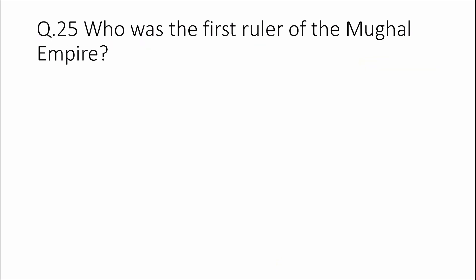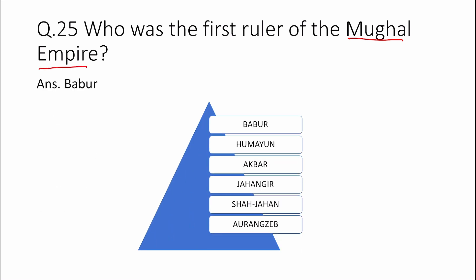Question 25: Who was the first ruler of the Mughal Empire? Answer: Babur. The order of Mughal rulers was: Babur, Humayun, Akbar, Jahangir, Shah Jahan, and Aurangzeb.